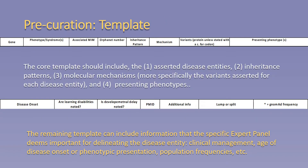The lumping and splitting working group has developed a pre-curation template. The core template should include the asserted disease entities or phenotypes, inheritance pattern, molecular mechanism — more specifically including the variants associated with each disease entity — and the presenting phenotypes. It is also helpful to include the associated MIM phenotype numbers for the disease entities asserted for the gene of interest, as found in OMIM. These can give an indication of whether two or more phenotypes are considered a disease spectrum, as they will have an identical MIM phenotype number. The remaining template can include information pertinent to the specific gene curation expert panel.